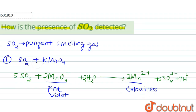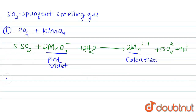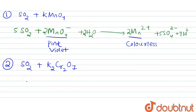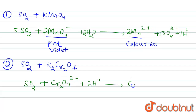Hence the presence of sulfur dioxide can be detected. The next test is the test of sulfur dioxide with acidified potassium dichromate solution, that is K₂Cr₂O₇. Sulfur dioxide reacts with K₂Cr₂O₇, reducing Cr₂O₇²⁻ to Cr³⁺, and sulfur dioxide itself gets oxidized to SO₄²⁻.